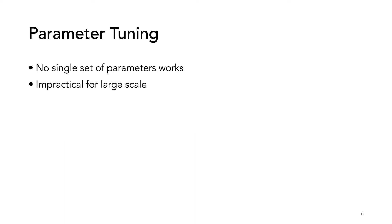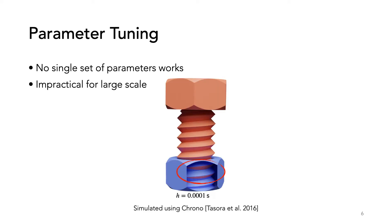Using a small time-step works well in small examples, but more complicated examples like this bolt still have intersections. Circled, the red bolt is poking through the blue nut, and this prevents the bolt from turning. Furthermore, we could not find a single set of parameters that works over all scenes.